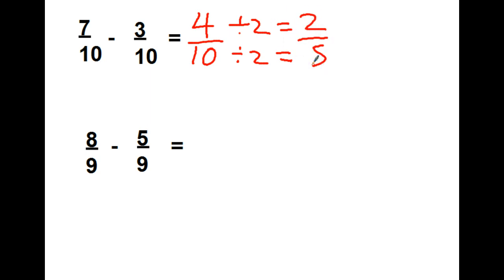So now I'm going to have 2 over 5. They're not both even, and the only number I can divide 2 by is 2 and 1. So I'm finished there.